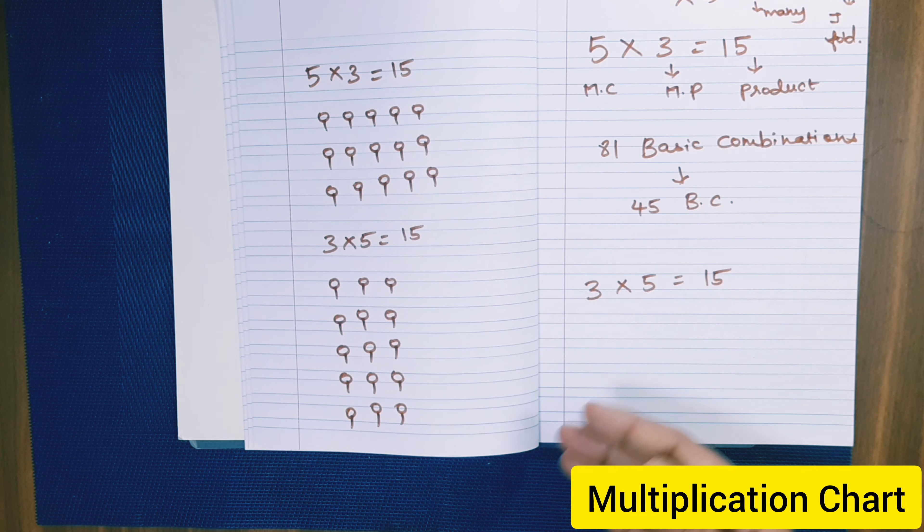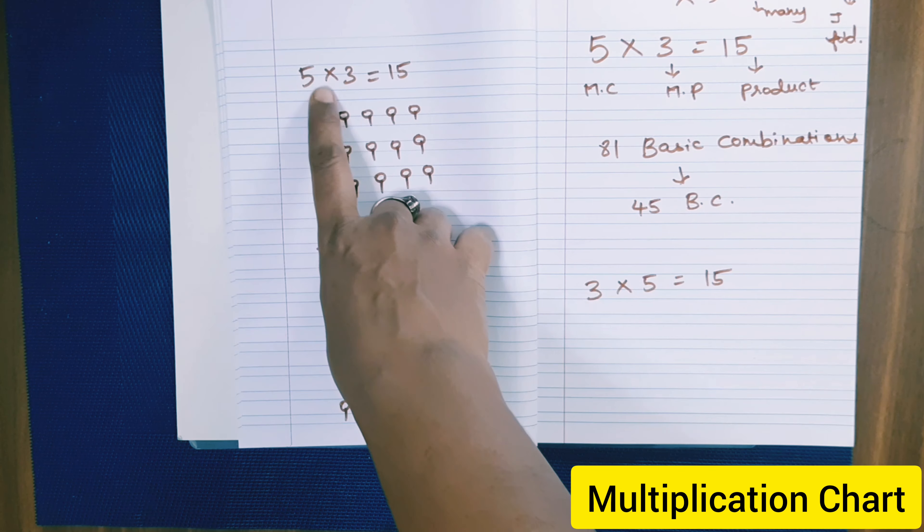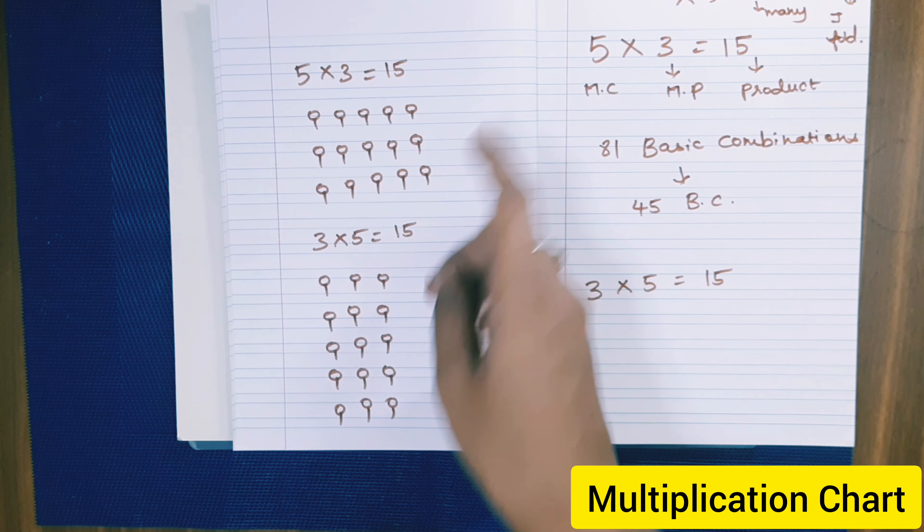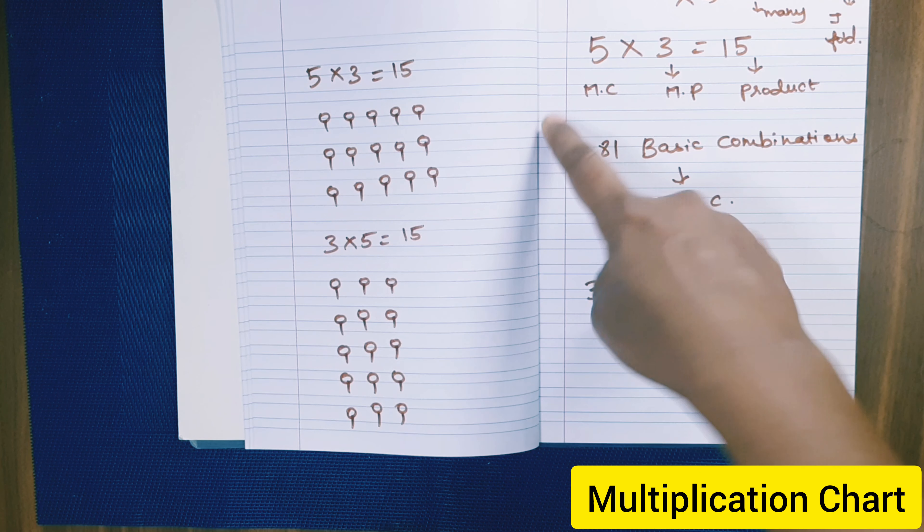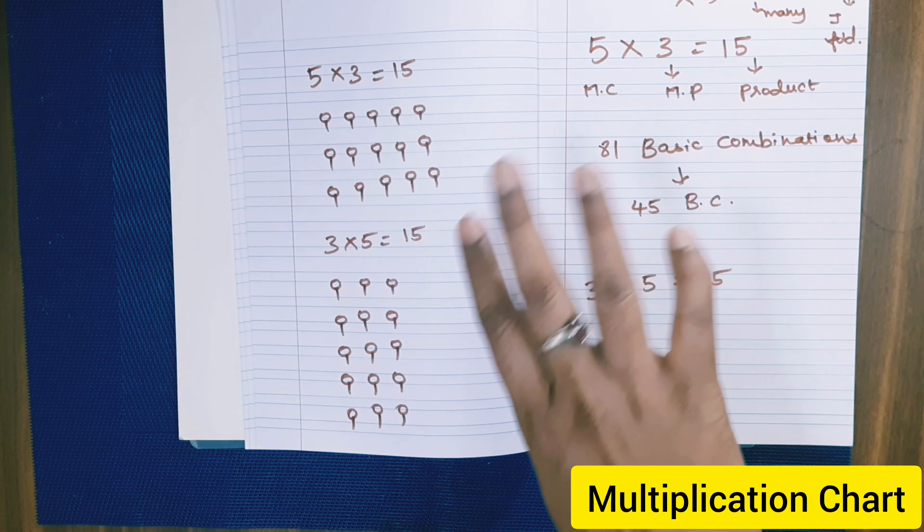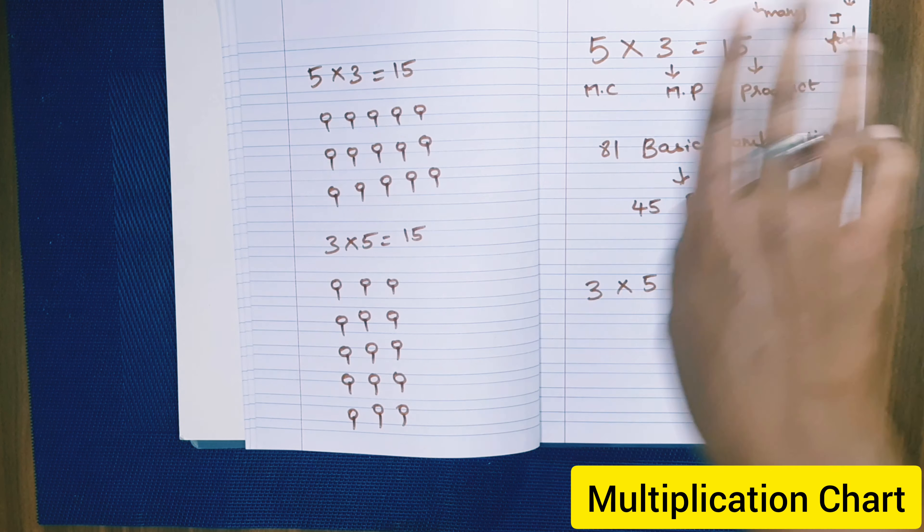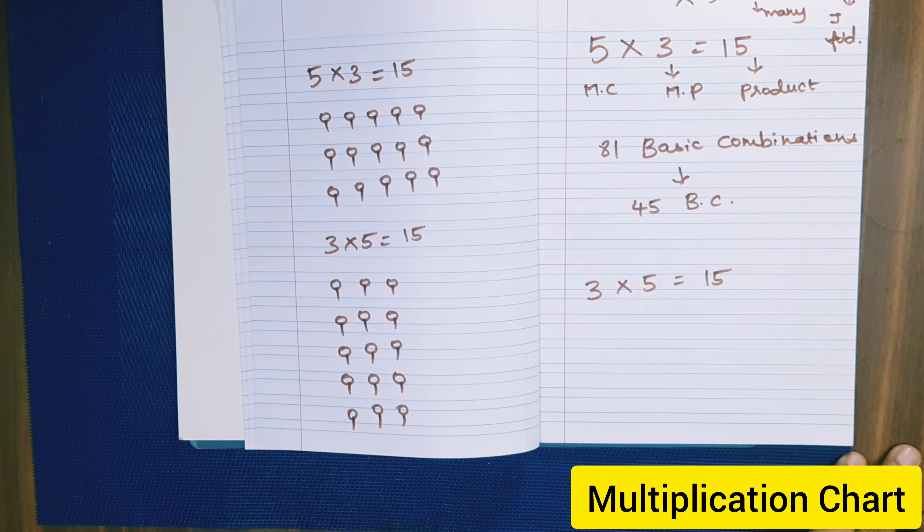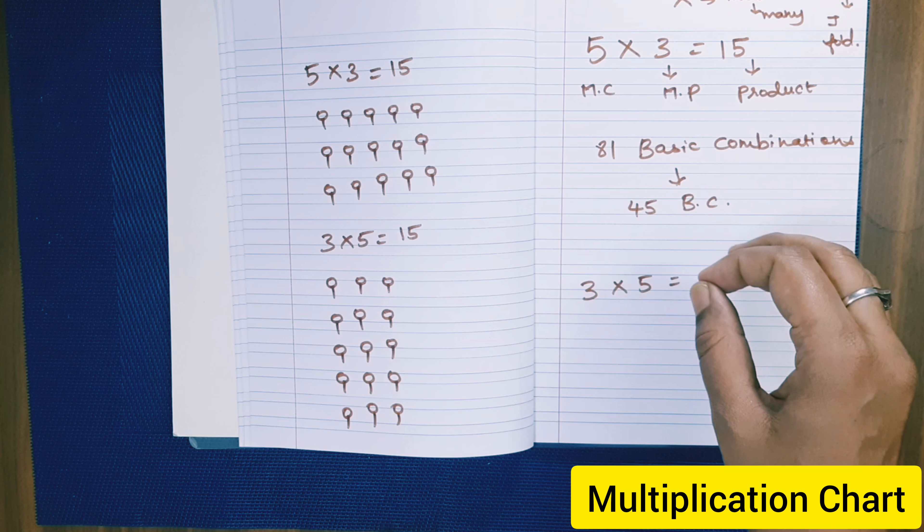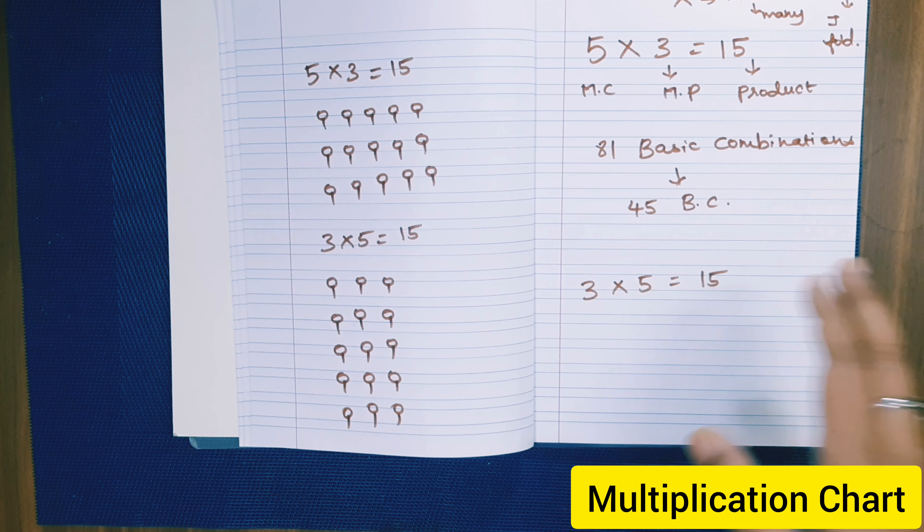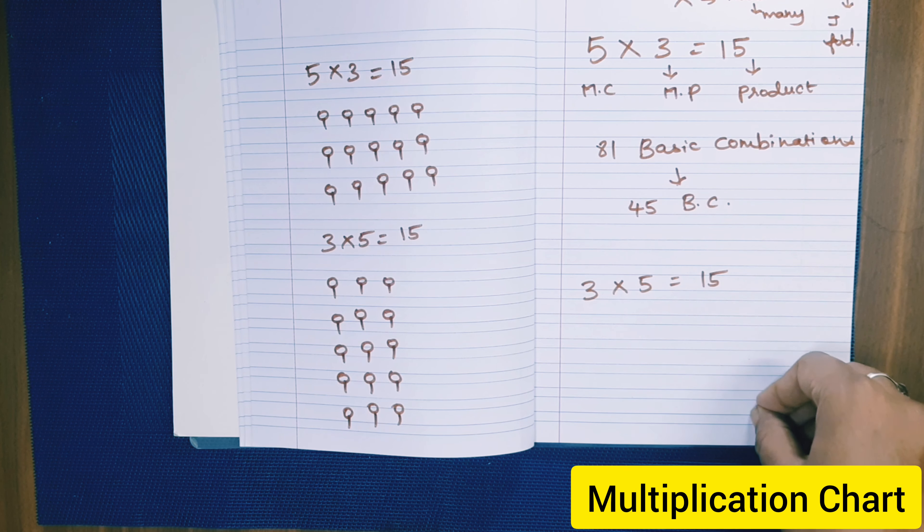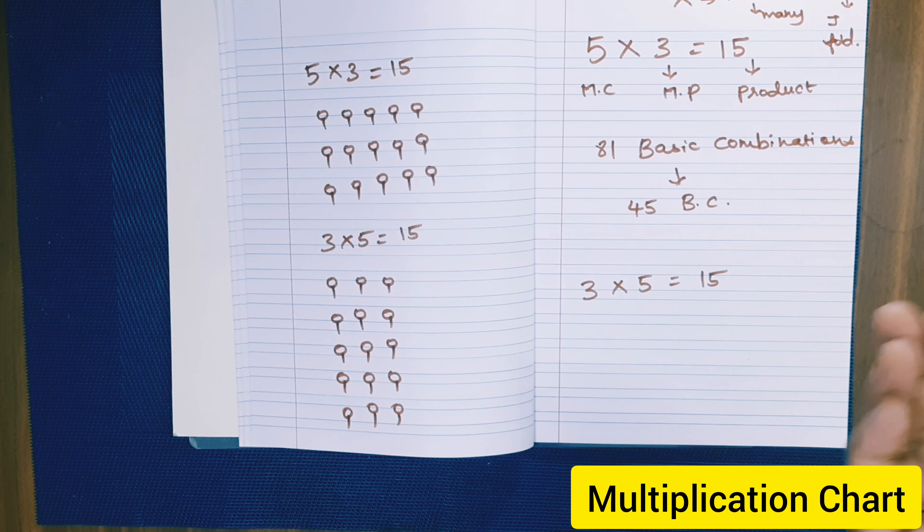And also you can always tell the child that 5 multiplied by 3 is 15, 3 multiplied by 5, the answer will be the same. It is multiplicand into multiplier or multiplier into multiplicand, the product will be the same. And some properties like any number multiplied by 0 is 0. So if you can tell the properties of multiplication, it will register in their mind and it will help them for problem solving and logical skills.